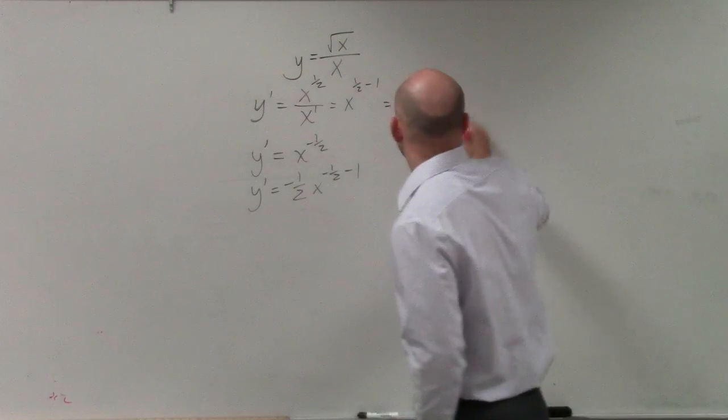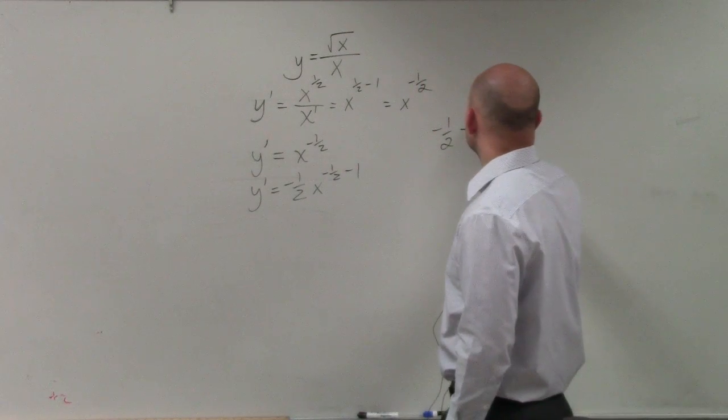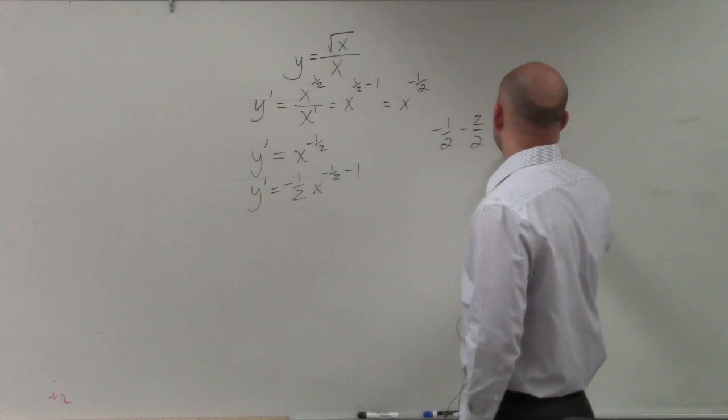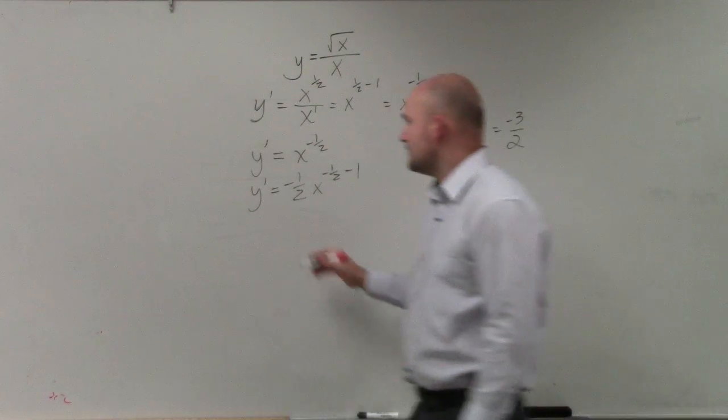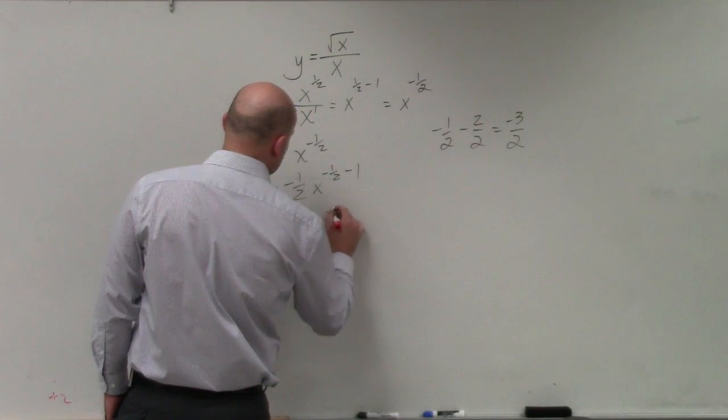And again, if you're not familiar with your negative 1, you can rewrite as 2 over 2. So that becomes negative 3 halves. So therefore, I have negative 1 half times x to the negative 3 halves.